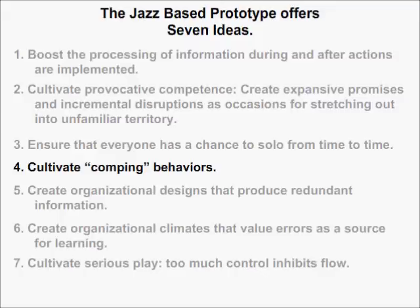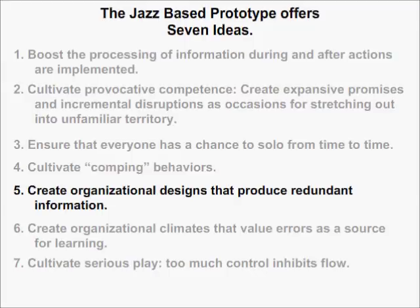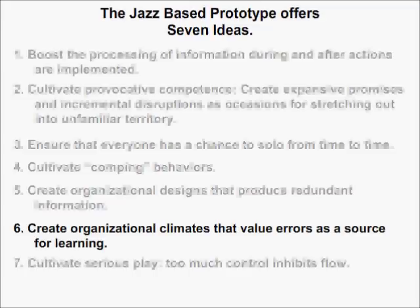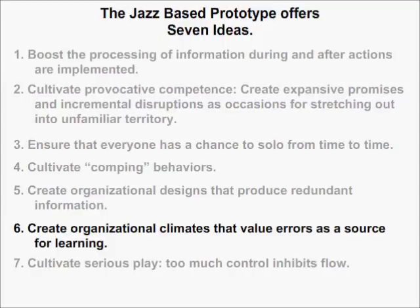Number five: create organizational designs that produce redundant information. Systems remain flexible when jobs are designed to reproduce overlapping results. People are able to recognize their role more easily by viewing the roles of everyone else and taking responsibility for anything viewed as missing or incomplete. Number six: create organizational climates that value errors as a source for learning. Errors should not be viewed as the inadequacy of others, but rather a way of distinguishing an endpoint to a way of thought or a process that could be eliminated from proper solutions. Sometimes a better or more novel solution arises when errors are made.